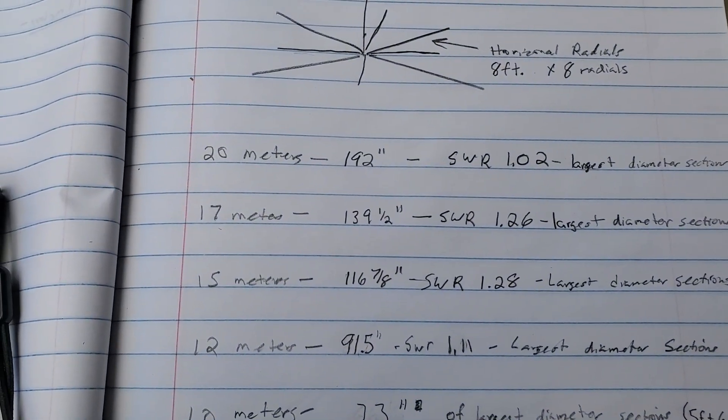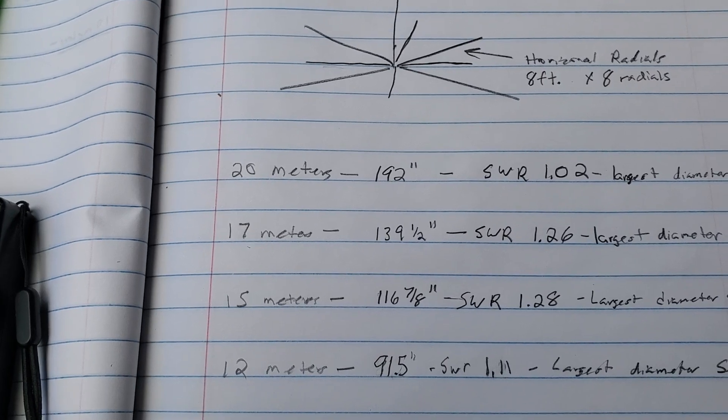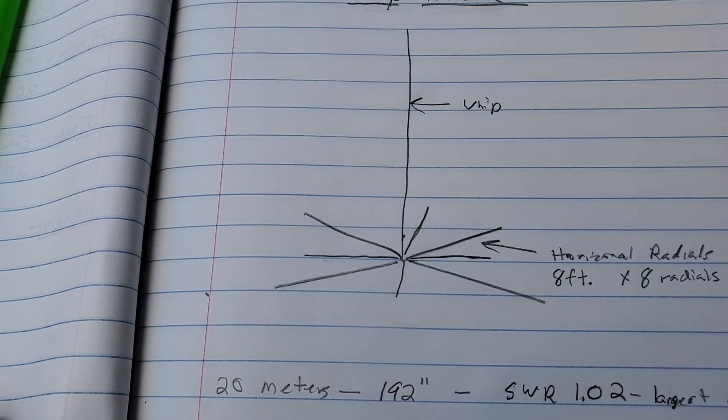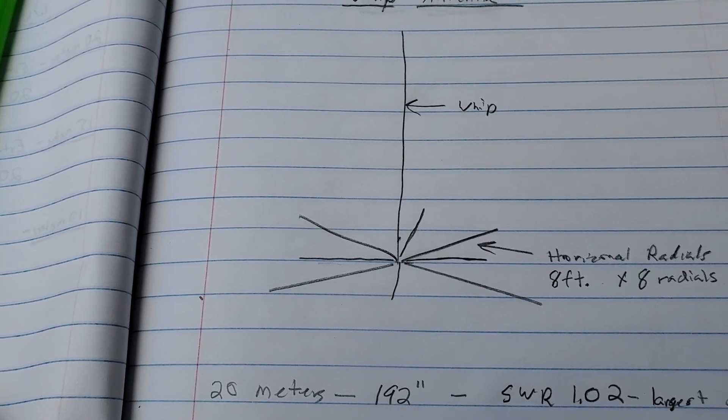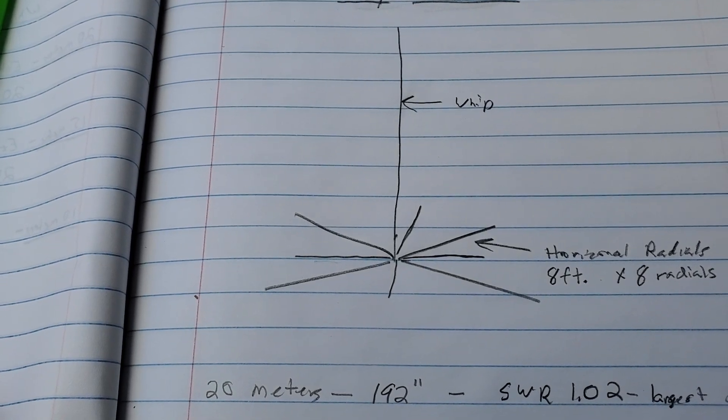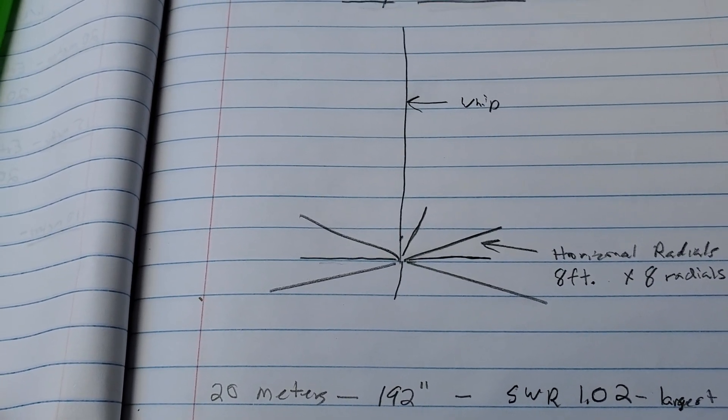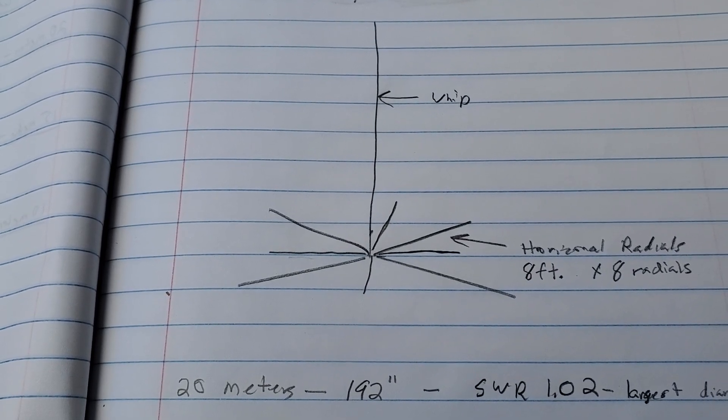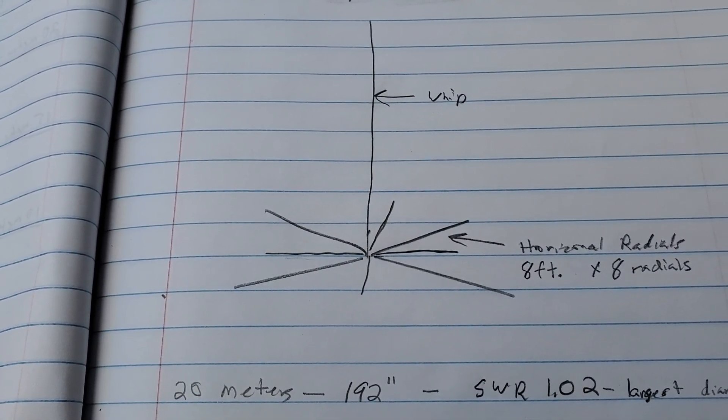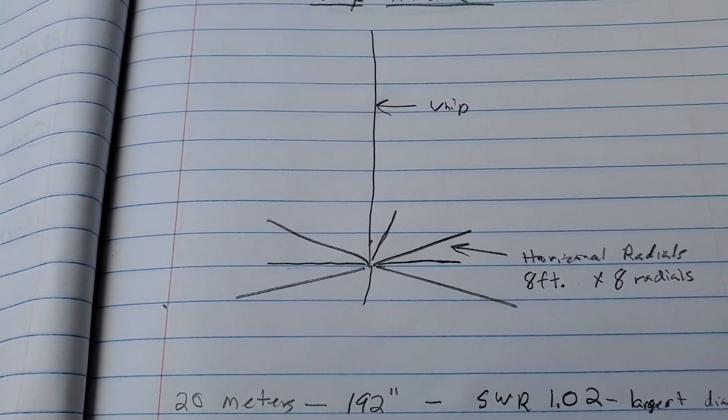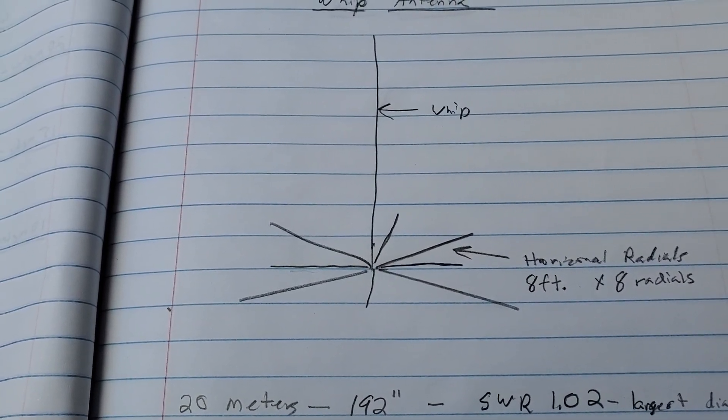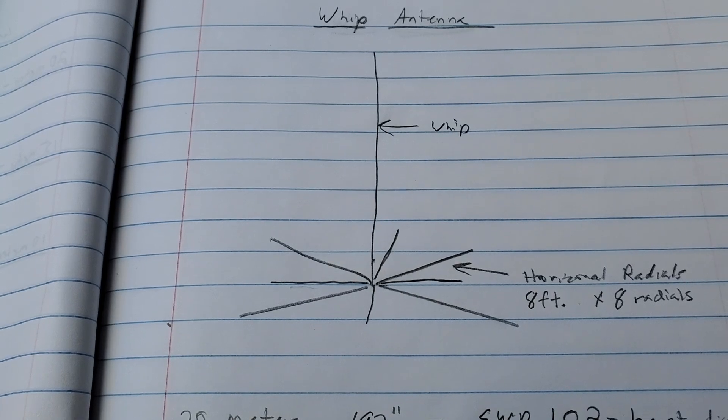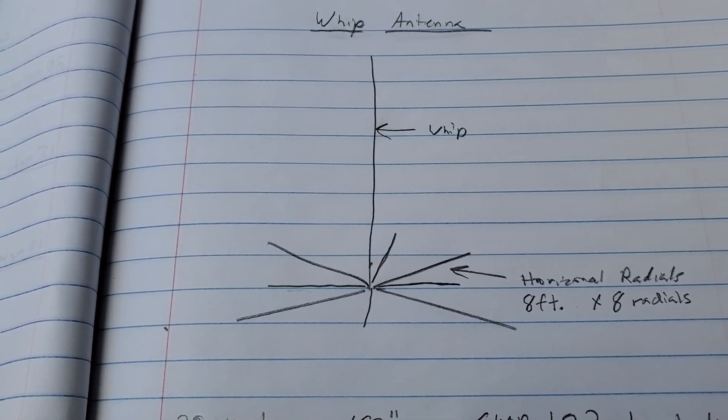I think the highest was probably 1.04 or 1.05, but what this consists of is a whip antenna that I picked up off of Amazon for right around $20, and some radials that I made out of speaker wire that I had laying around the house. This is perfect for portable operation—that's my intent for this antenna. I've been using this antenna for over a month and it's just awesome.